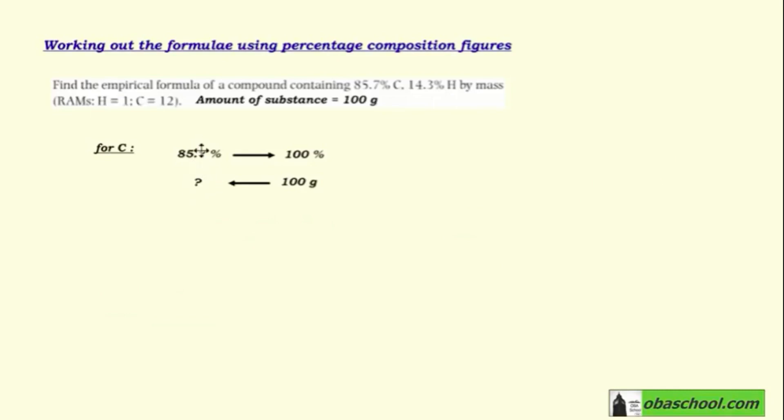We simply apply cross multiplication. Multiply 85.7 by 100 and multiply 100% with the question mark. Since there's a question mark, we set question mark equals 85.7 multiplied by 100 divided by 100.